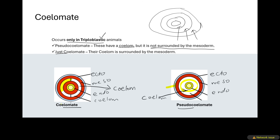So to summarize: all coelomates have got a coelom, but we can differentiate them. In a pseudocoelomate, the body cavity is not surrounded completely by the mesoderm — the mesoderm is just outside the coelom on one side. Whereas in a true coelomate, the white part which is the coelom is within the red layer. That's the difference between pseudocoelomate and coelomate.